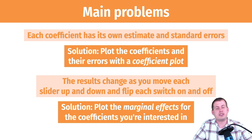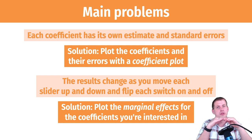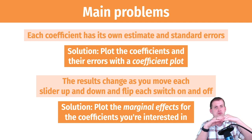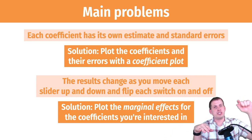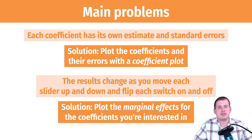Marginal effects is essentially the graphical version of the slider and switch analogy: you hold all other variables constant and tinker with one variable. You use the average level of cylinders, the average type of drive, and only move displacement up and down to show what miles per gallon does as you move displacement while holding everything else the same.